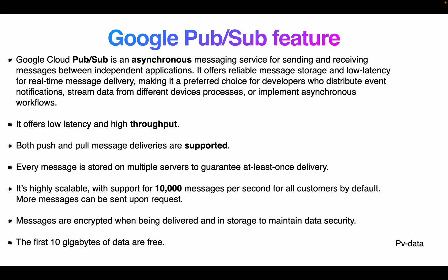Google Cloud Pub/Sub is an asynchronous messaging service for sending and receiving messages between independent applications. It offers reliable message storage and low-latency real-time message delivery, making it a preferred choice for developers who distribute event notifications and stream data from different devices. It implements asynchronous workloads, offers low latency and high throughput, and supports both push and pull message delivery. Every message is stored on multiple servers to guarantee at-least-once delivery, and it's highly scalable, supporting about 10,000 messages per second by default.